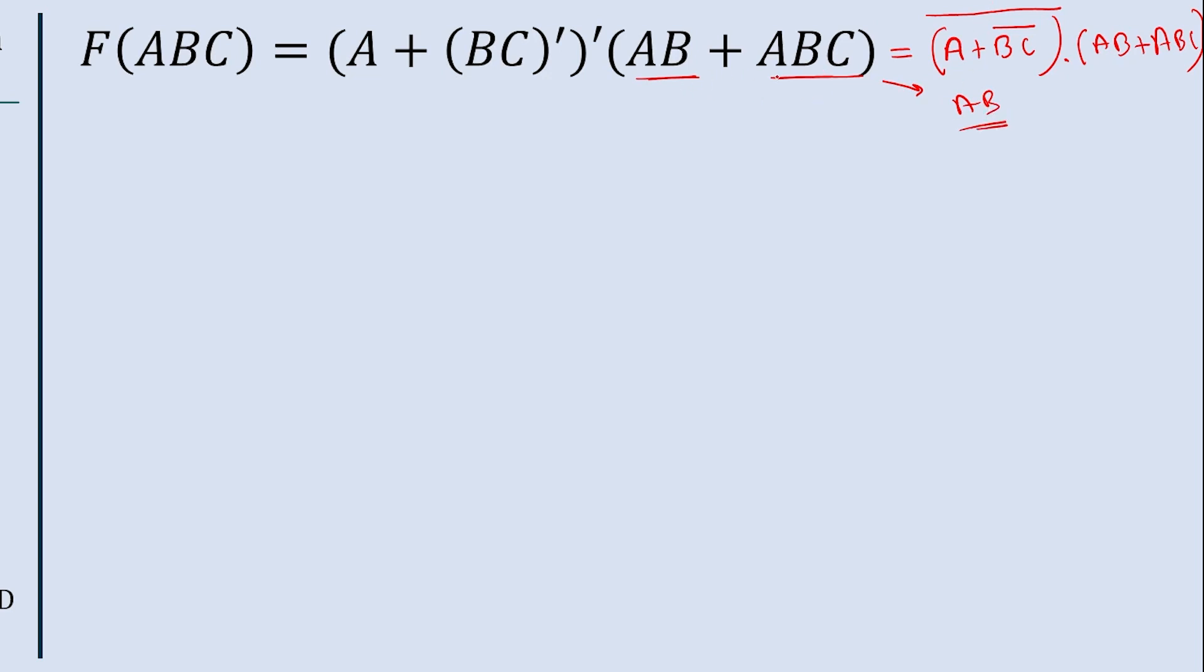What is the traditional way? We will take AB common and then we will write 1 plus C. So here we are taking AB common, writing 1 plus C, and this 1 plus C is equal to 1.